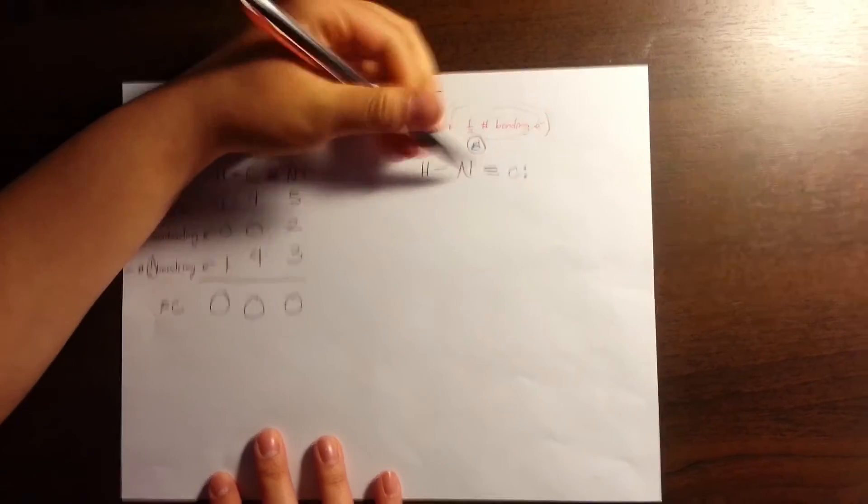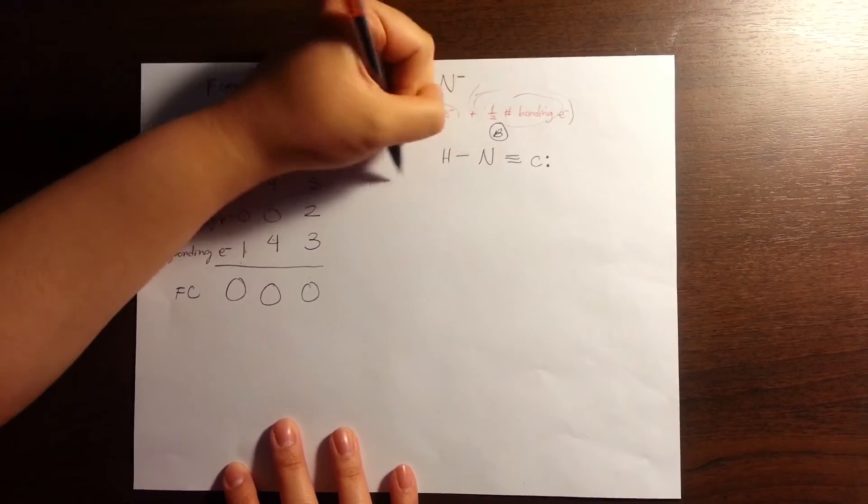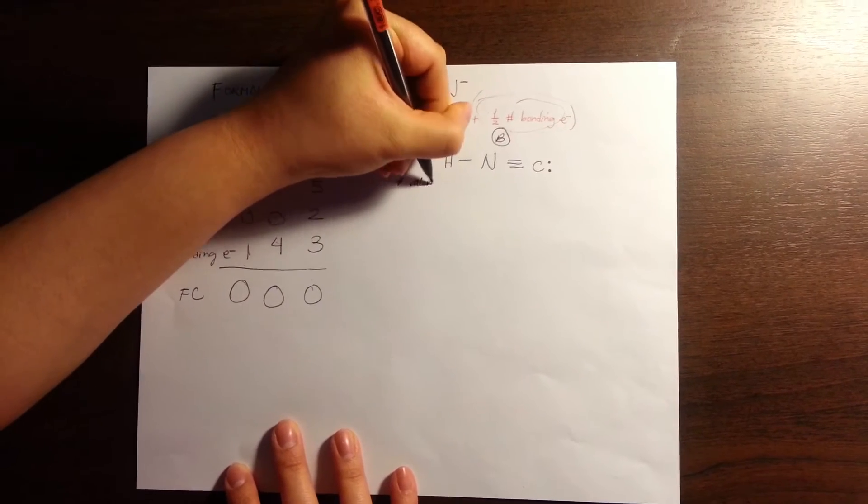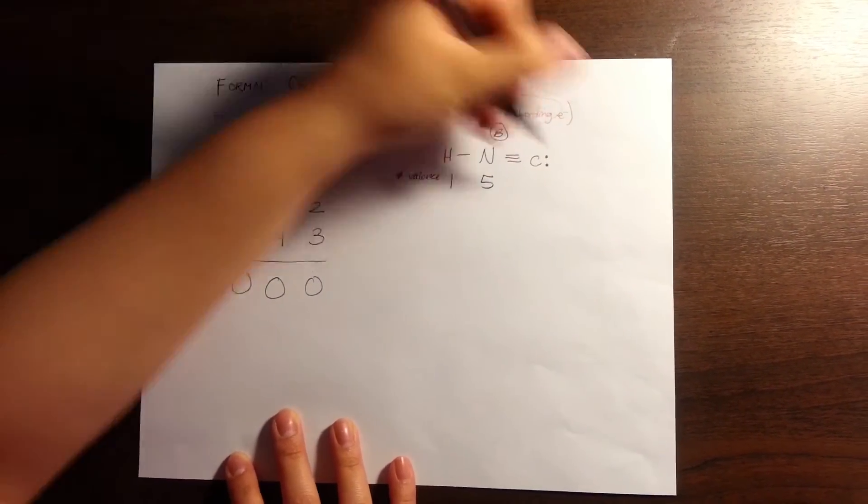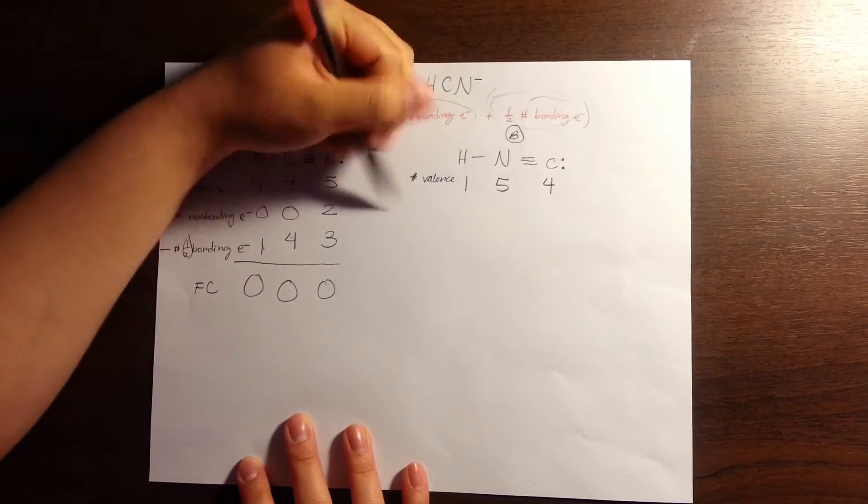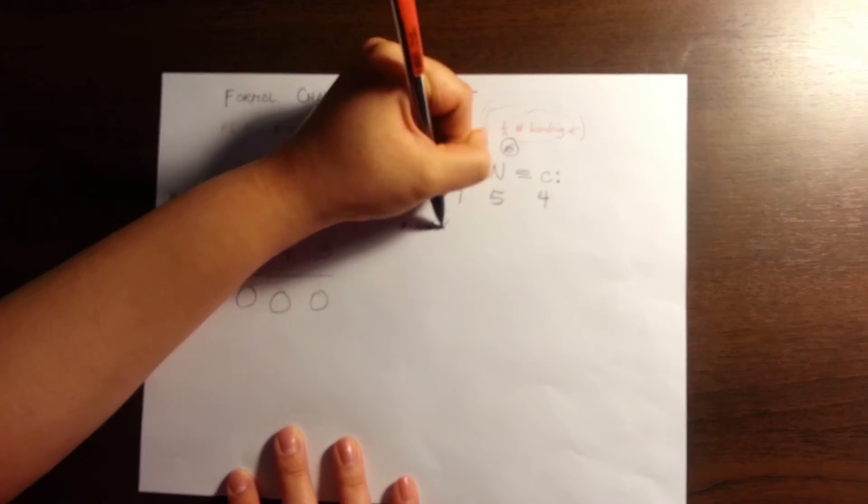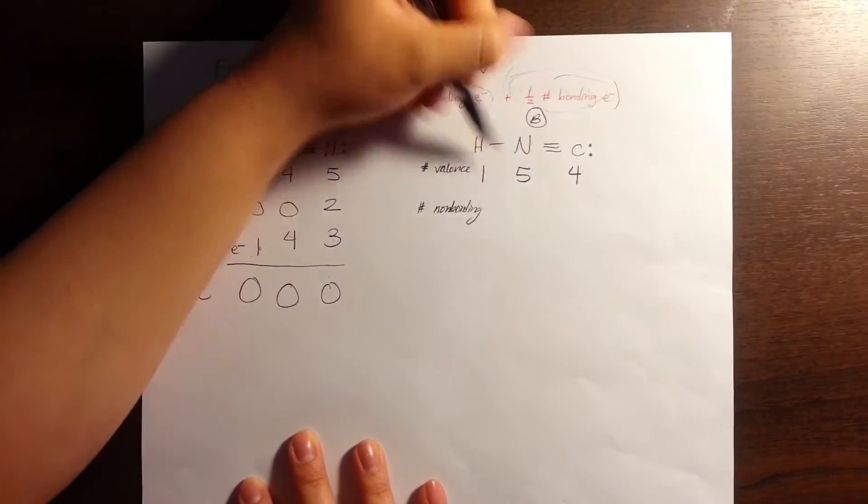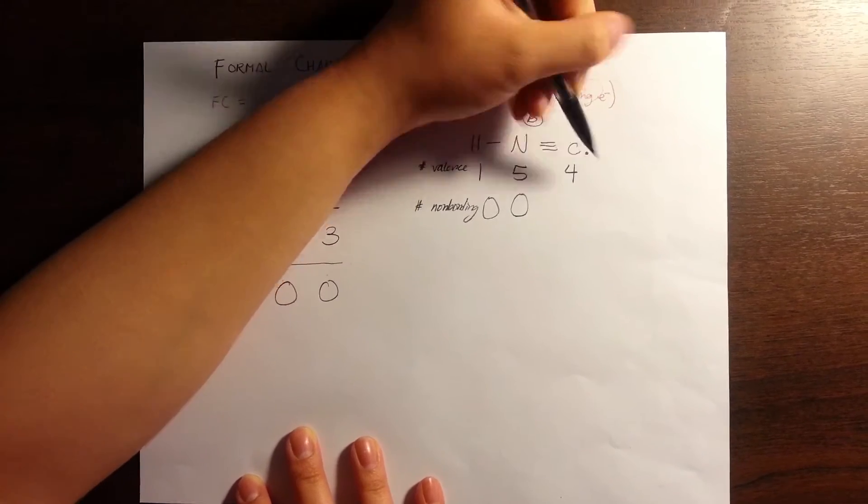We're going to do the same thing over here. Our number of valence electrons: hydrogen is one, nitrogen is five, carbon is four. Our number of non-bonding electrons, which is the number of dots: hydrogen is zero, nitrogen is zero, carbon has two.